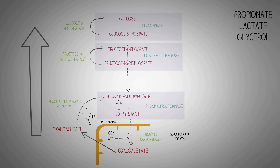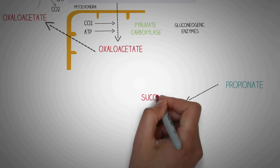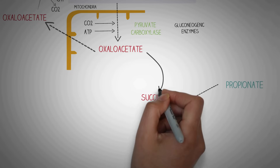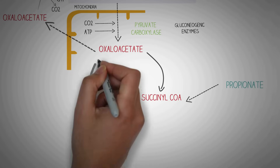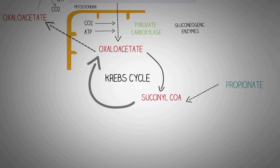Other substances like propionate, lactate, and glycerol are also converted to glucose through specific pathways. Propionate is first converted to succinyl-CoA, which is an intermediate in the Krebs cycle. Succinyl-CoA gets converted to oxaloacetate, and then oxaloacetate is converted to phosphoenol pyruvate.